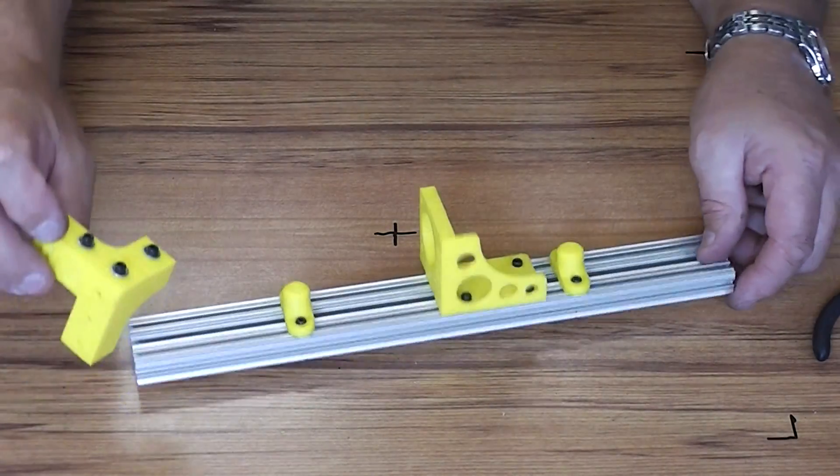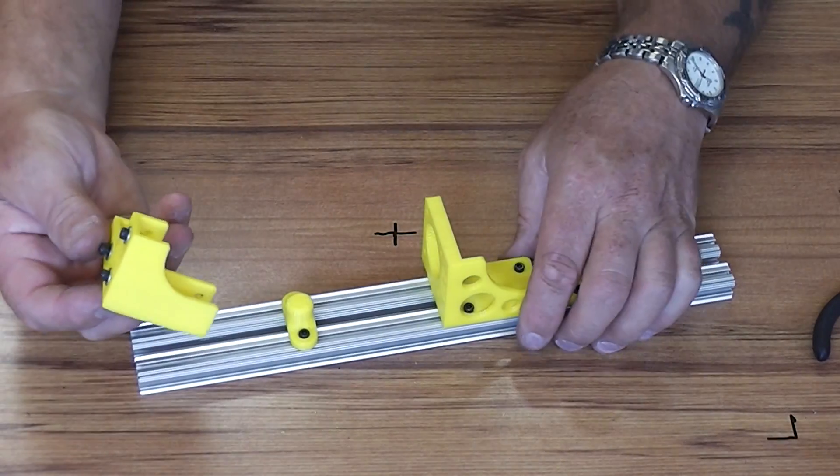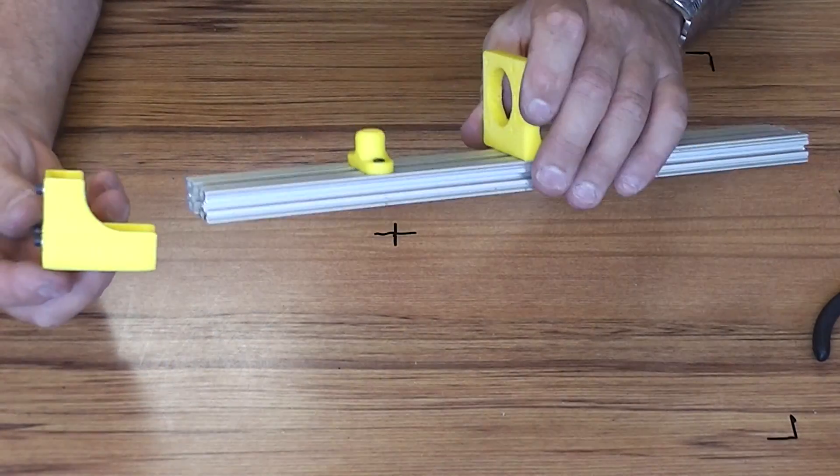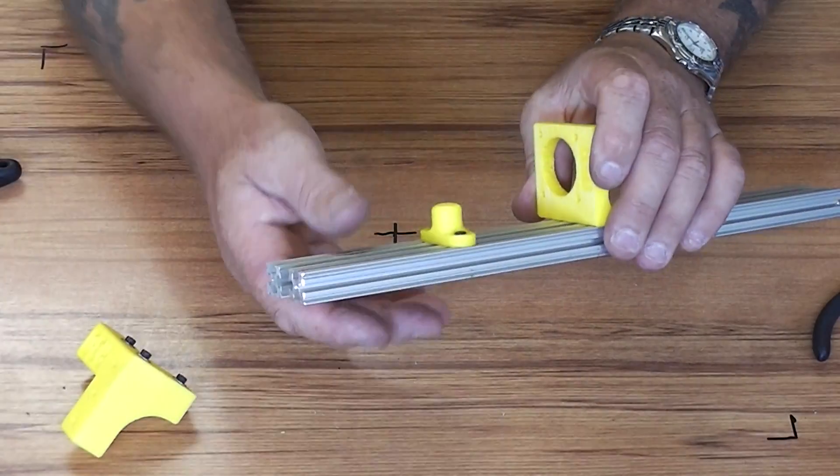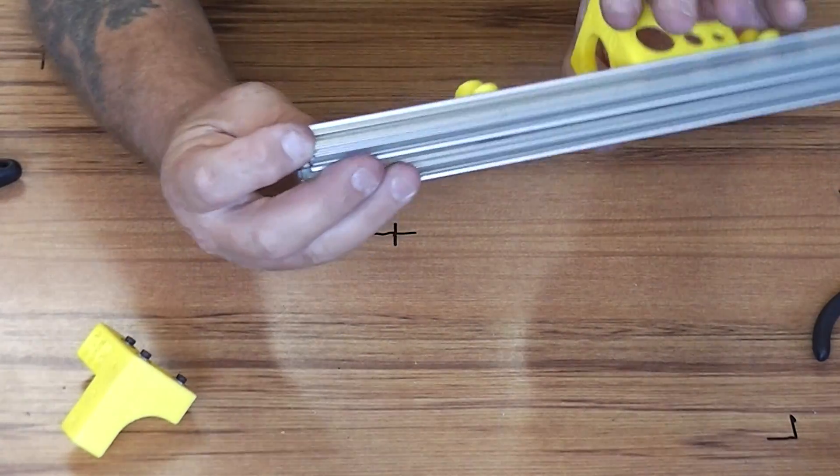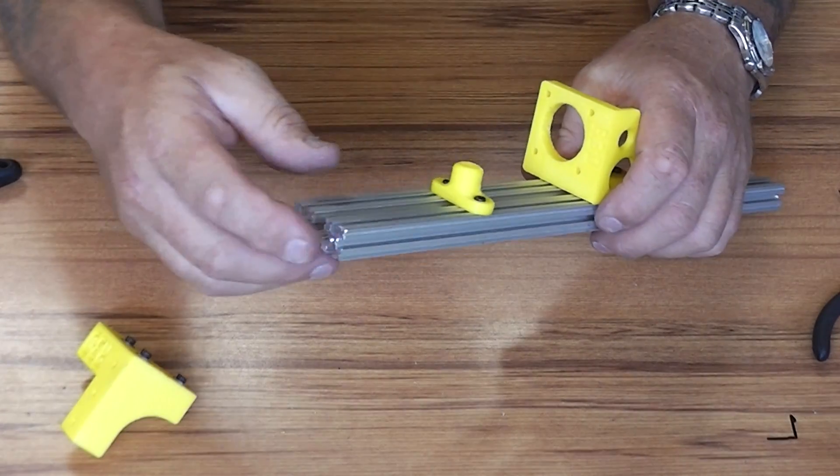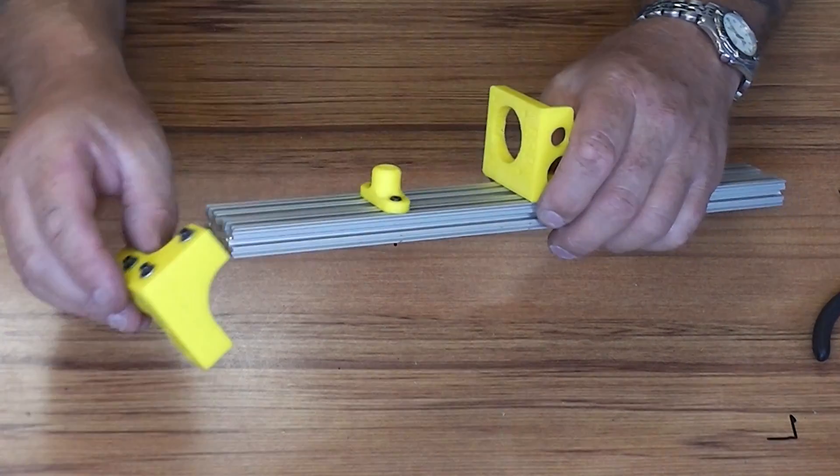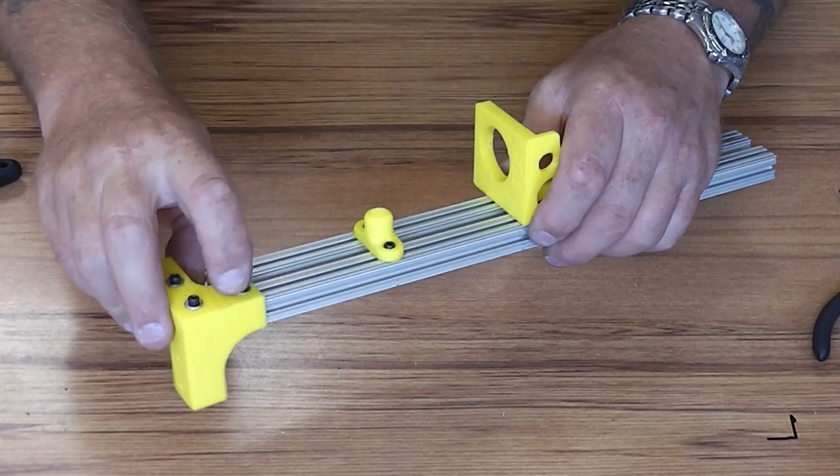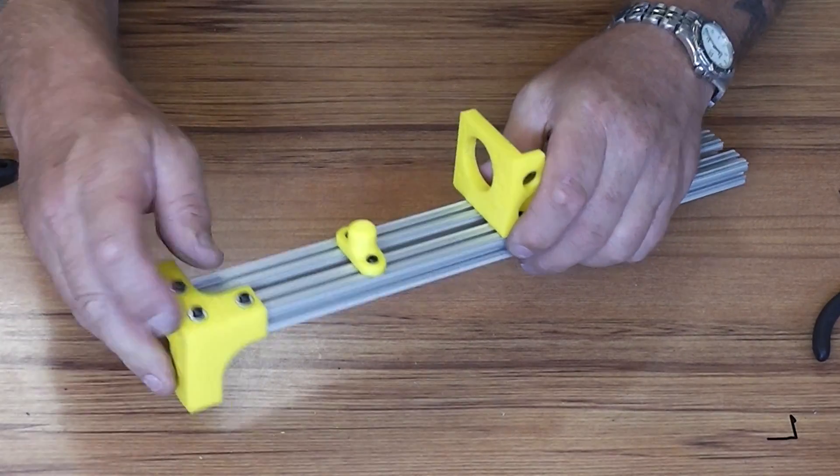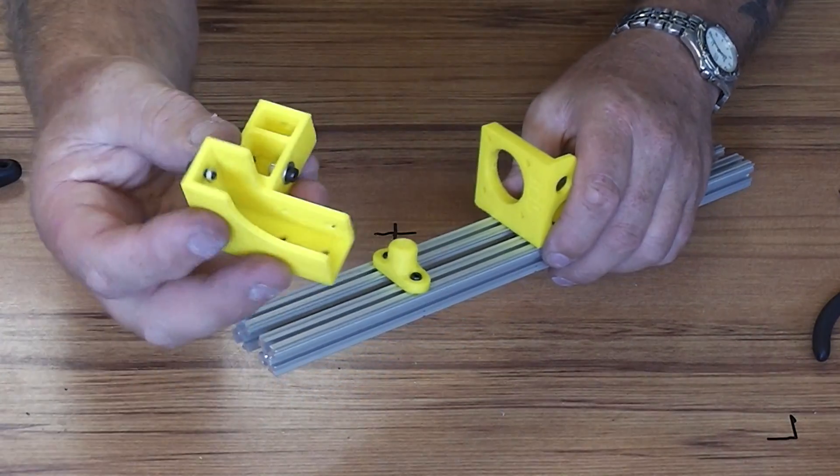Then we'll put the ends on. This is the right hand end and we've got the same situation here. The top one is going to have a screw in the end grain as well; the other ones are just going to be clamped from the side. I've already pre-installed the nuts in there.